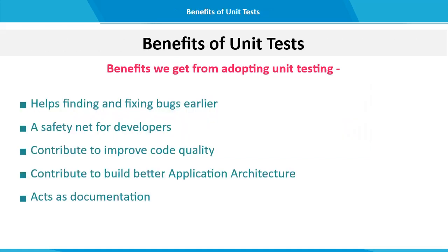There are several benefits of carrying out unit tests. Unit tests help us to find bugs and fix them. Unit tests work as a safety net for the developer. By frequently running unit tests, developers can be assured that their modifications are correct. Unit tests can contribute to a high level of code quality. Since unit tests act as a safety net, developers become more and more confident when changing their code.